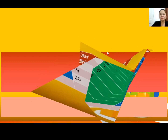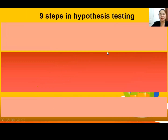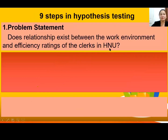Now we follow the nine steps in hypothesis testing. Step 1 — Problem Statement: Does a relationship exist between the work environment and efficiency ratings of the clerks in HNU? Or: Is there a significant relationship between the work environment and efficiency ratings of the clerks in HNU?